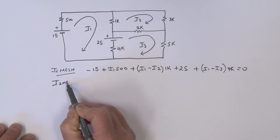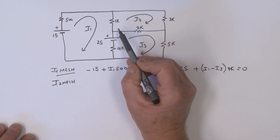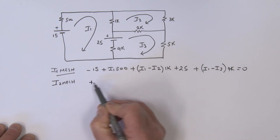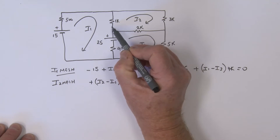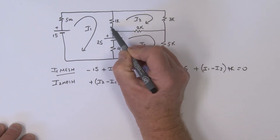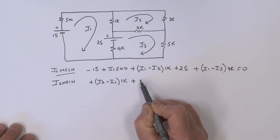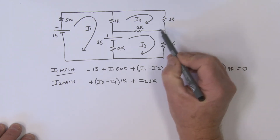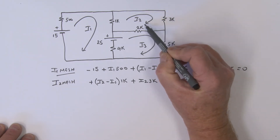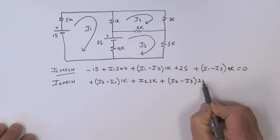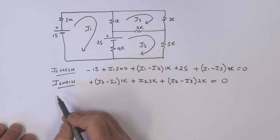For the I2 mesh current equation, we go around the mesh in the clockwise direction. You can see the pattern here: plus (I2 minus I1) times 1k, since I2 is the lead current defining a plus-minus voltage and we're hitting the plus first. Coming to the next component, that's plus I2 times 3k. Then this component is I2 minus I3, with I2 as the lead current, giving us a plus — that is times 2k. All of that equal to zero; that is the I2 mesh equation.